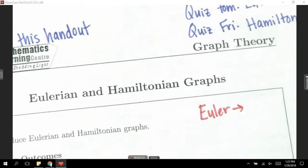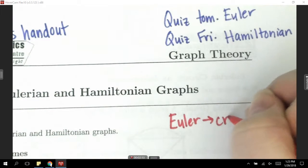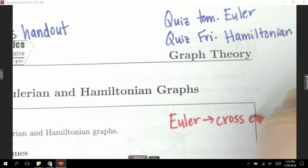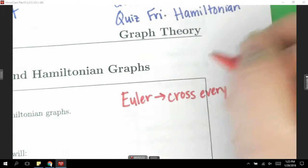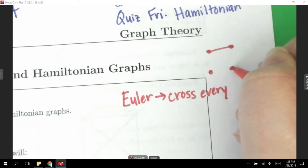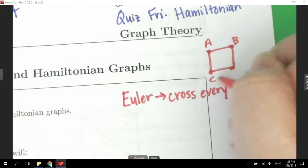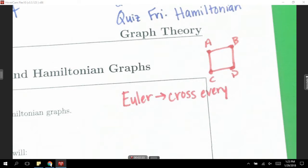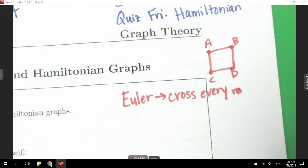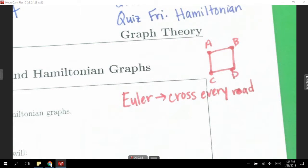We've been dealing with Euler stuff for a while. What do we want to cross? Cross every what? Like we've had these dots and then we've had these things drawn and then we've been trying to figure out whether or not it was Euler. What were we trying to do? Cross every... Yes, which we were calling a road.